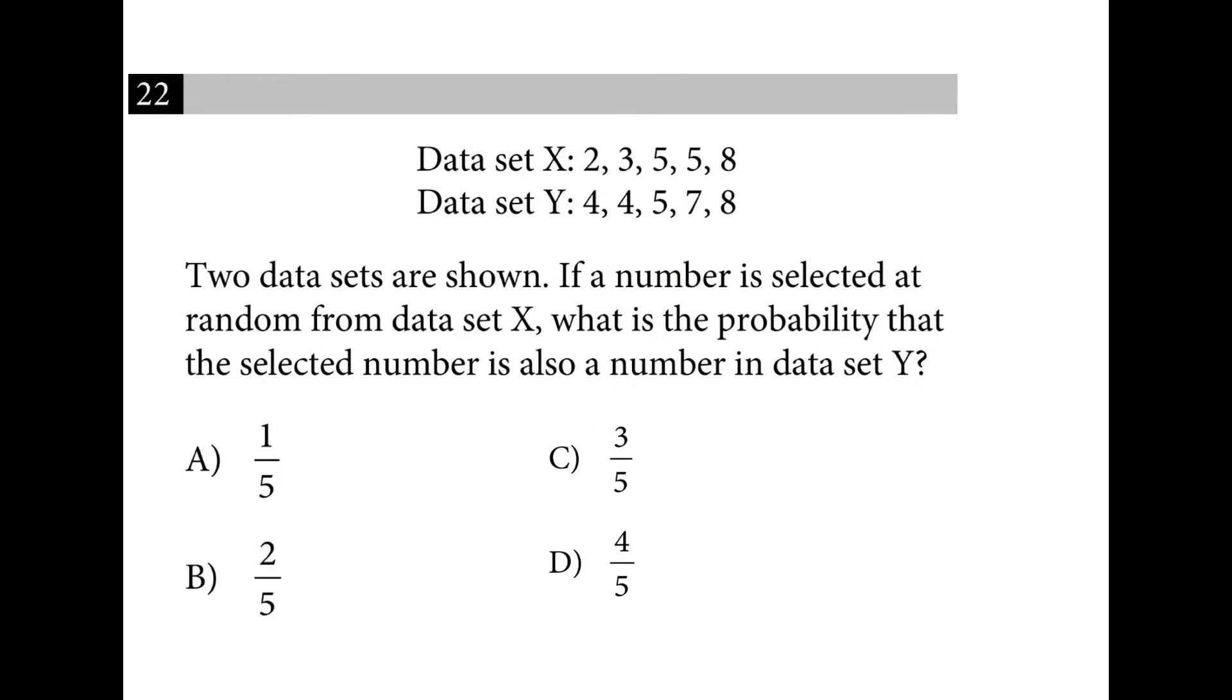If a number is selected at random from data set X, what is the probability that it's also a number in data set Y? So these three numbers are also in data set Y. So 3 out of 5 are in that other set.